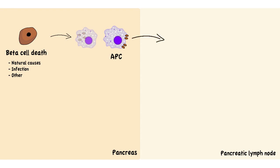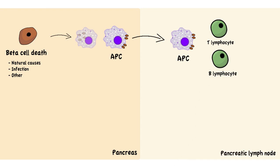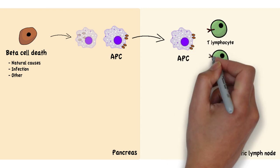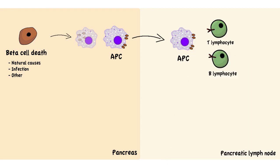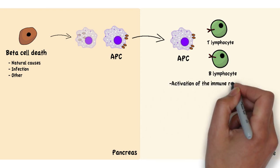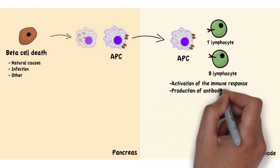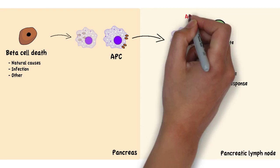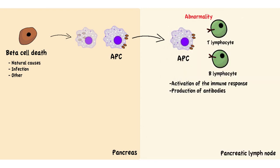These antigen-presenting cells travel to pancreatic lymph nodes, where T lymphocytes and B lymphocytes will present receptors for these beta cell antigens. Upon contact with the antigens, T cells activate the immune response and B cells start producing antibodies. This is an abnormality, as the immune system should not be triggered by an autoantigen.